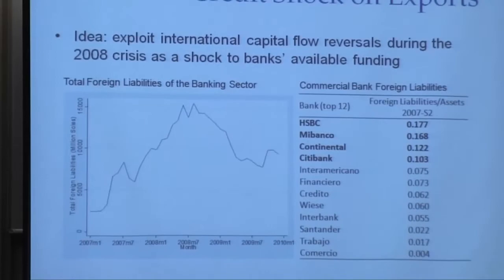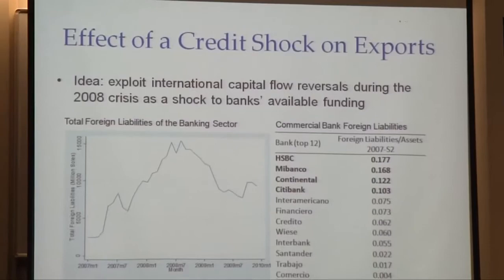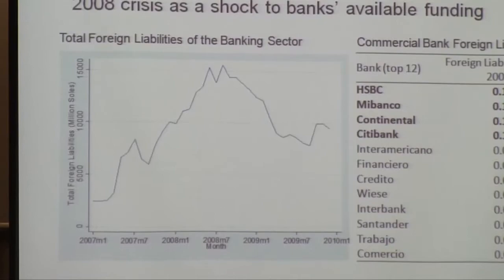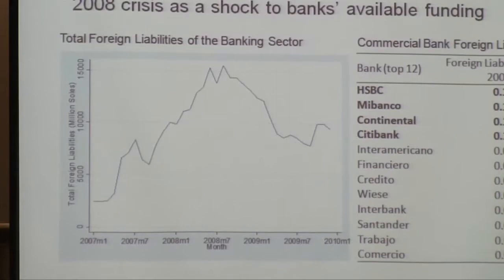The idea is to exploit international capital flow reversals during the crisis as a shock to the available funding to banks — this is common not just in this crisis but in every crisis. On the plot on the left hand side, we have the total amount of foreign borrowing by the banking sector in Peru. Foreign liabilities were increasing all the way back to 2007, and by mid-2008, this trend stops and actually reverts. This is typical for countries as a whole: when you have flight to quality during macroeconomic uncertainty, capital flows out of emerging markets.